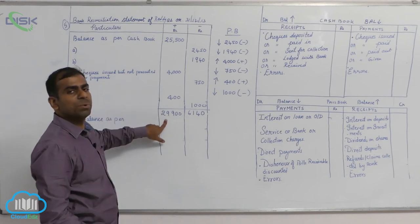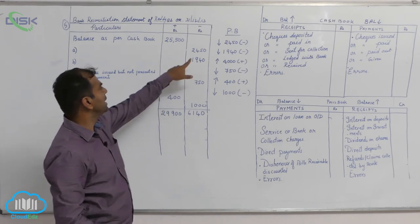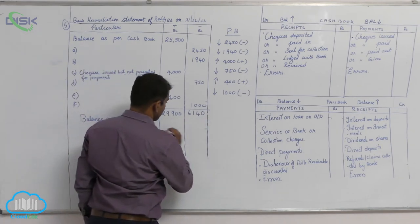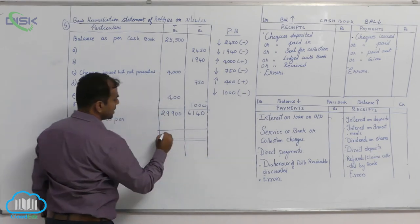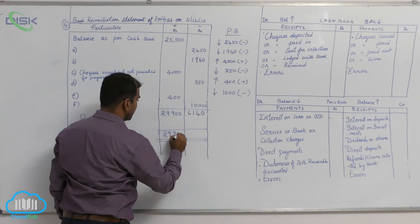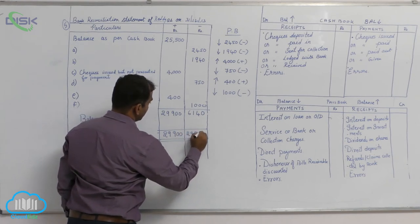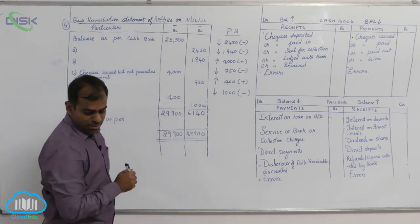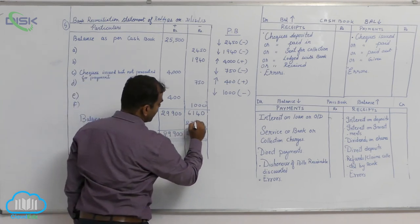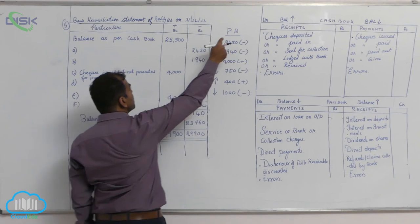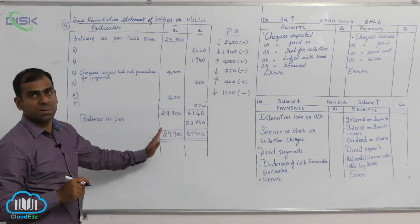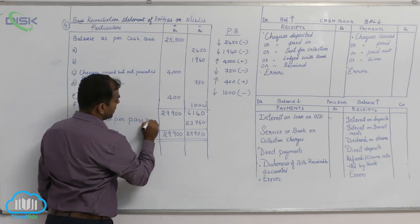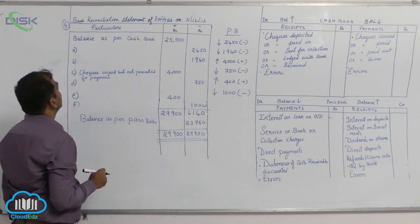Now let us total both the sides. As we totaled, the plus column total came to 29,900 and the minus column total comes to 6,140. So as a result, take the total which is more on both the sides - 29,900. So 29,900 minus 6,140 is 23,760. That is the balancing figure. So this is the balance of the passbook which you are finding out. Since the plus column total is more, we simply say balance as per passbook. We will do the next problem.